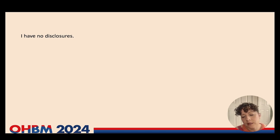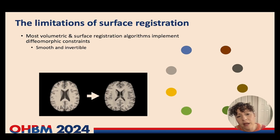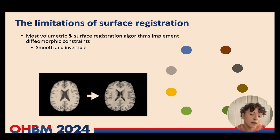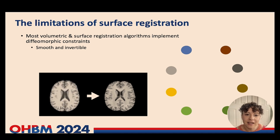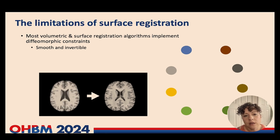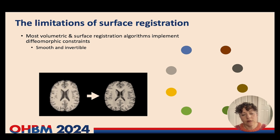I have no disclosures to make. By this stage of the symposium, I imagine that you have a good understanding of why we want to analyse cortical signals on a surface instead of a volume. But the purpose of this talk is to highlight that classical surface analyses still have their limitations, because most of the techniques you've heard about today rely at least to some extent on surface registration, which is known as an ill-posed problem.